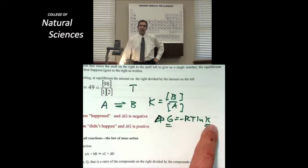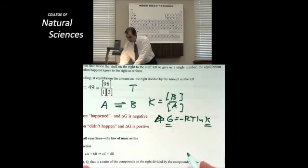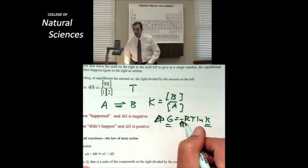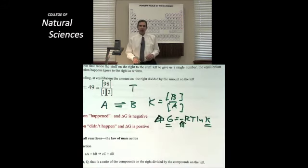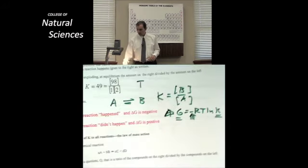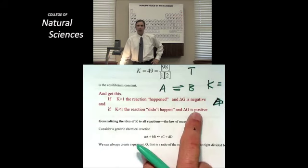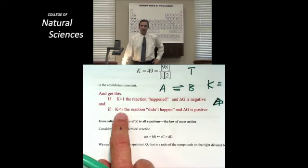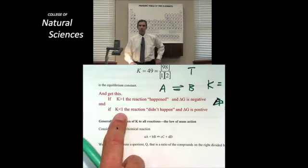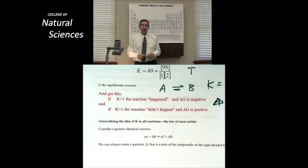Equilibrium constant and delta G, and that negative sign right there is what it is that flips things so that a negative delta G corresponds to K being greater than 1, or a positive delta G corresponding to K being less than 1. But we'll look at this numerical sort of result coming up in the future.